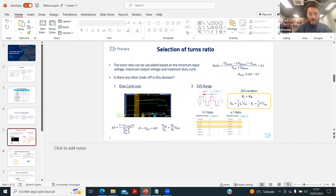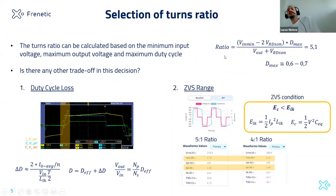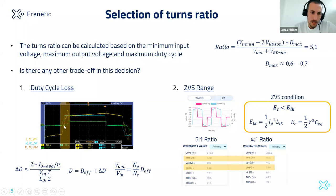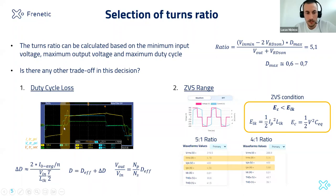There are a couple of things to consider here beyond the simple equation. One is what's called the duty cycle loss. When we apply a certain voltage to the transformer, because of the leakage inductance we have an inductor in series with it. There's a voltage drop occurring there — so when there's a current flowing, the voltage seen by the ideal transformer is less than what we apply. The bigger the leakage inductance, the bigger the voltage drop and the less voltage reaching the secondary side and load.